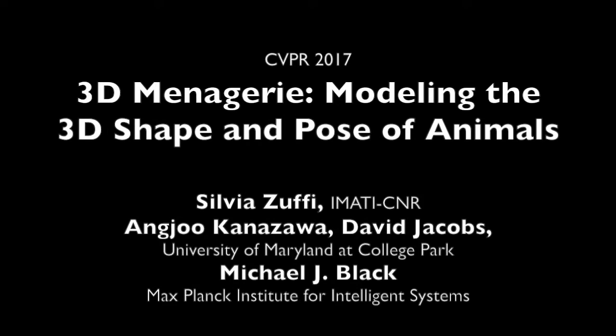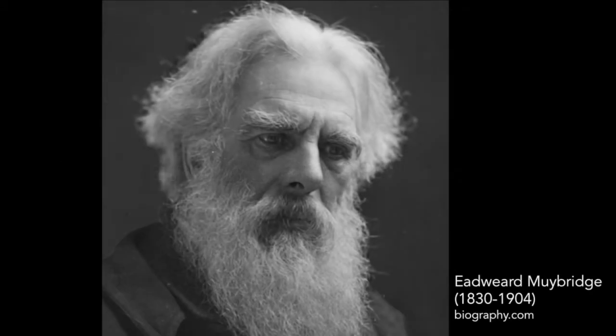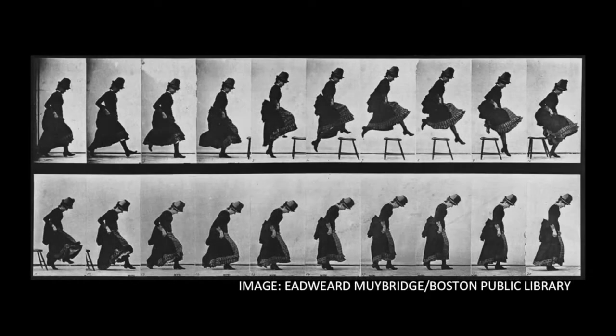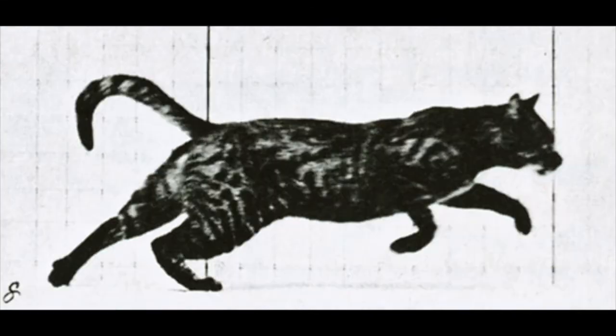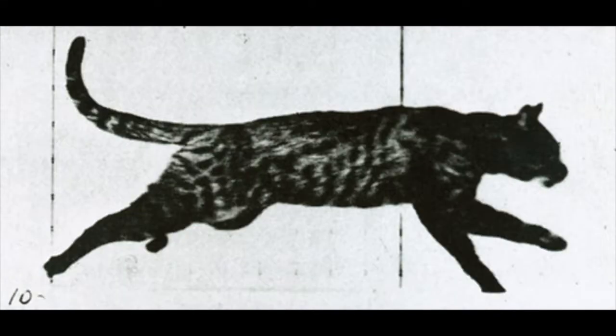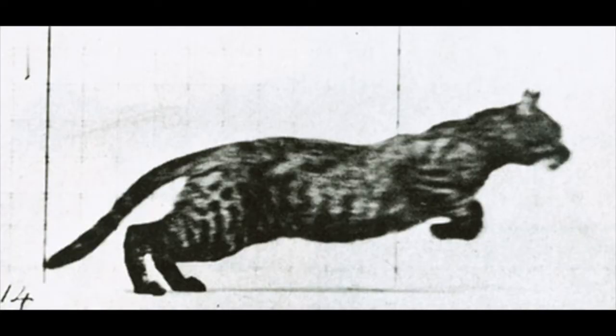We describe the paper 3D Menagerie: modeling the 3D shape and pose of animals. The study of human and animal motion has a long history, dating back to pioneering work from Muybridge. Muybridge took sequences of pictures of humans and animals in action, pictures taken at a fixed rate corresponding to video frames, as in this example of a cat's run.